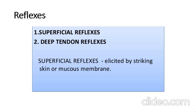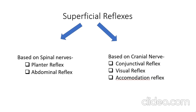Reflexes are of two types: superficial reflexes and deep tendon reflexes. Superficial reflexes are when a stimulus is applied to skin or mucous membrane; in response, the underlying muscle contracts. Deep tendon reflexes are monosynaptic reflexes — there is one synapse at the level of the spinal cord. Superficial reflexes are polysynaptic reflexes, meaning more than one synapse is involved and some higher centers are involved.